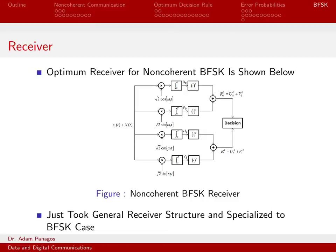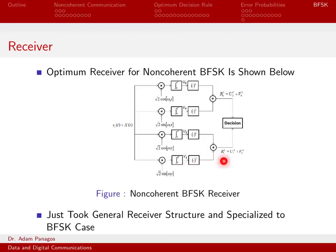Here is the optimum receiver for binary frequency shift keying — we've taken the general non-coherent scheme and specialized it for BFSK. The top two branches look for frequency omega_0, and the bottom two branches look for frequency omega_1. They work by doing correlation and integration to get the decision statistics U0, V0, U1, and V1. We square each and add them together: that gives us R0 squared and R1 squared.